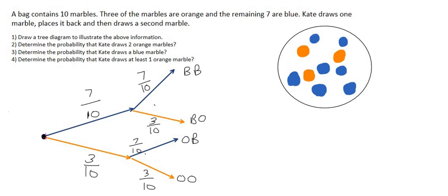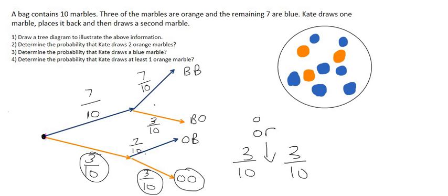So now the next question says determine the probability that Kate draws two orange marbles. So her first one is three out of ten and the next one is three out of ten. What would go in between that? Would you say or, or would it be and? Does she draw an orange or another orange, or does she draw an orange and another orange? Well she draws an orange and another orange, so we're going to multiply. If it was or, we would use the or formula. Remember, if it says and you multiply, if it's or you plus. So whenever you work on a tree diagram question, to work out the probability of a specific branch, you multiply. And so if we multiply these now, we get nine over one hundred.